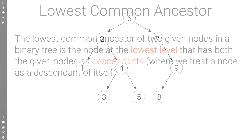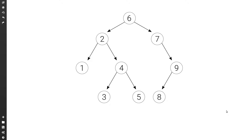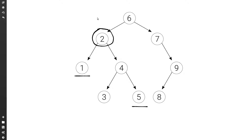Let's see some examples. Here we have a simple binary tree. Let's see what is the lowest common ancestor of one and five. We start at root. Root has both one and five as descendants, so it's a candidate. But then at a lower level we have two, which also has one and five as descendants. And then there is no more node on a lower level that has both one and five as descendants. So we say that two is the lowest common ancestor of one and five.